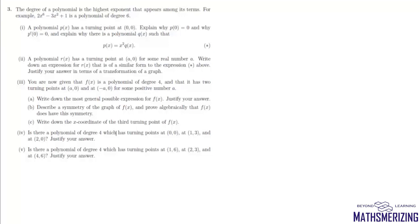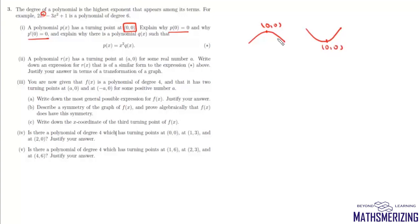In question number 3, the degree of a polynomial is the highest exponent. For example, for this polynomial the degree is 6. A polynomial p(x) has a turning point at (0,0). We need to explain why p(0) equals 0 and why p'(0) equals 0. Since the point (0,0) lies on the curve, p(0) = 0. And at turning points the derivative is 0, so p'(0) = 0 as well.